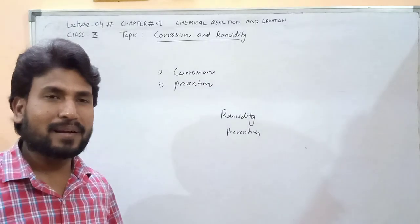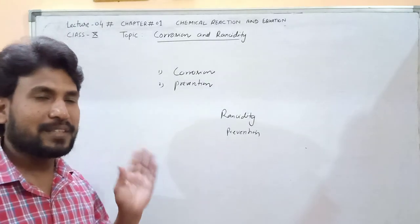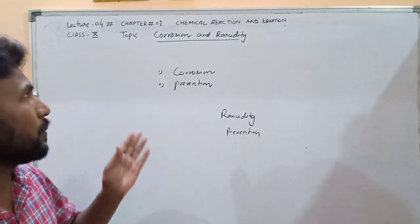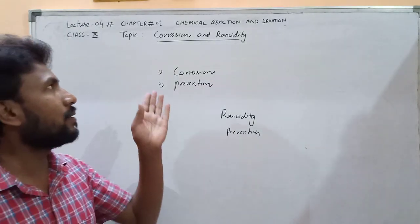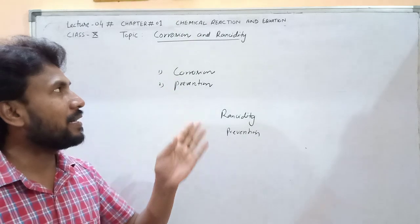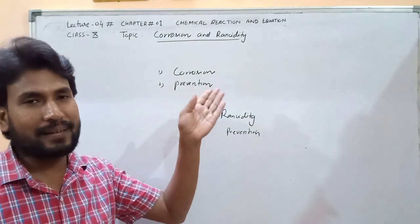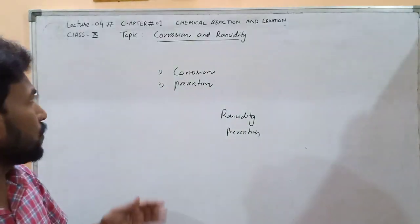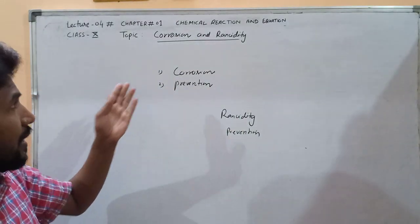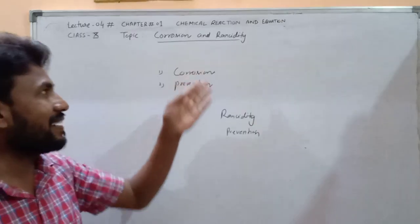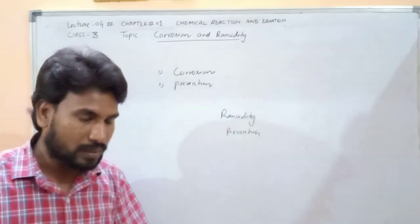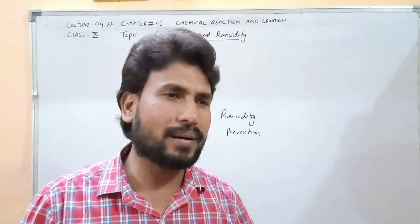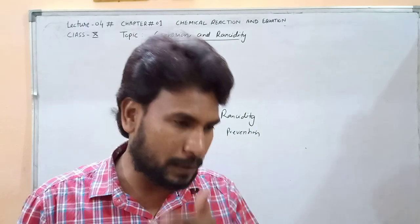Hello dear students, welcome to lecture 4. The last topic of this chapter on chemical reaction equations is Corrosion and Rancidity. Today we will understand what Corrosion and Rancidity is.